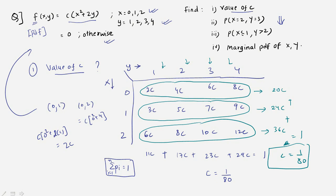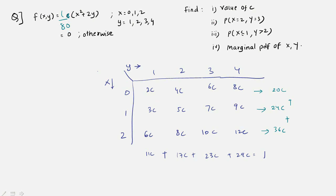The first part is complete — we found c = 1/80, so the PDF is now f(x,y) = (1/80)(x² + 2y). For the second question, we need to find the probability when x = 2 and y = 3.